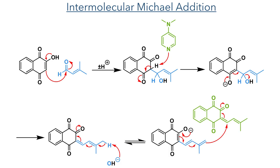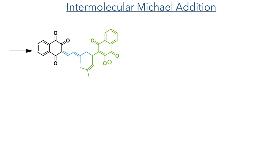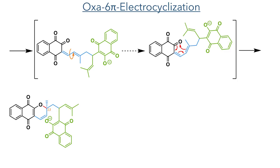The deprotonation of this dienone at the terminal methyl group could produce an enolate that could undergo an intermolecular Michael addition to another equivalent of the dienone. This highly unusual intermolecular Michael addition would form the first bond dimerizing these two molecules, and this could set the stage for an oxa-6π electrocyclization.